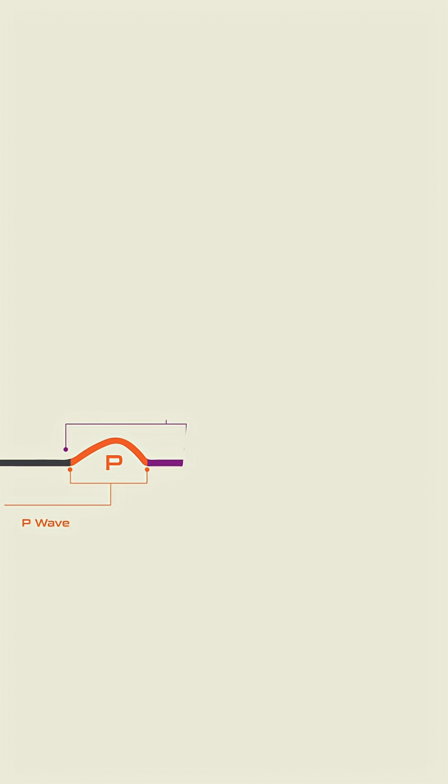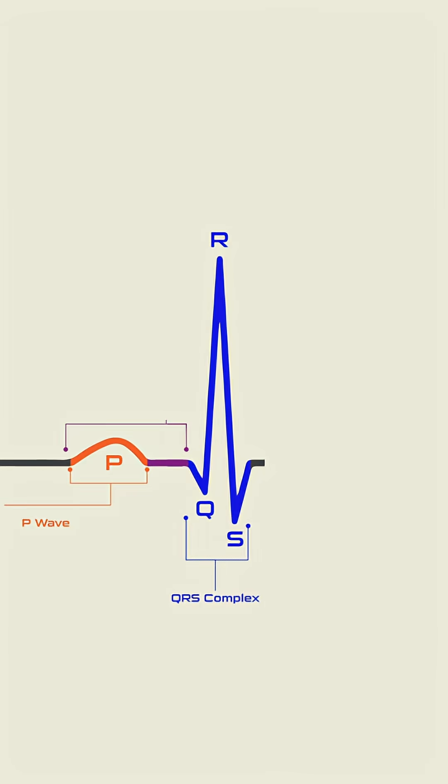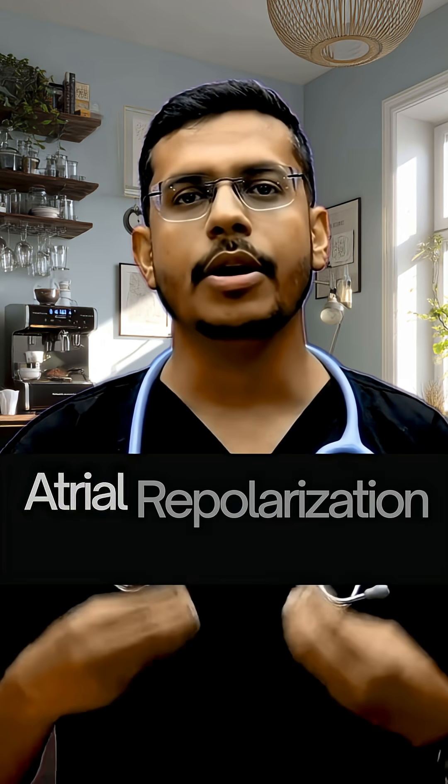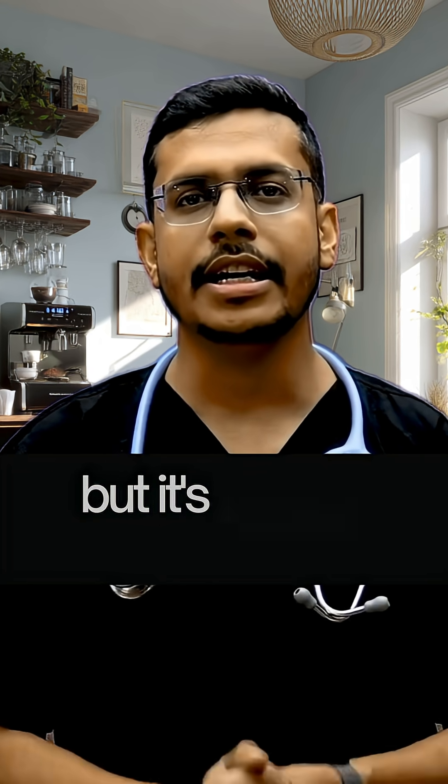Now the most important part — the waves. P wave: atrial depolarization, atria contracting. QRS complex: ventricular depolarization, ventricles contracting. T wave: ventricular repolarization, ventricles relaxing. Pro tip: atrial repolarization exists, but it's hidden inside the QRS complex.